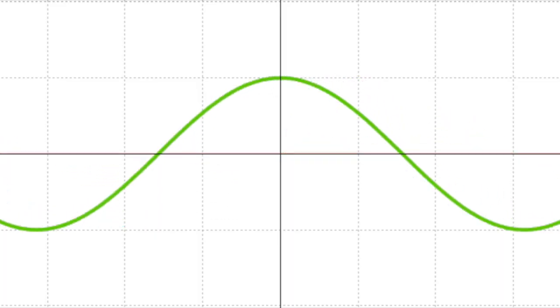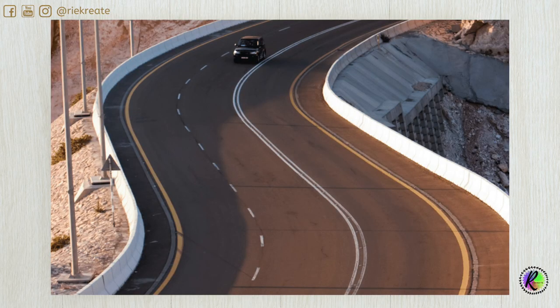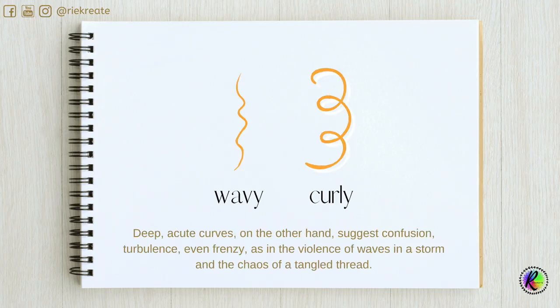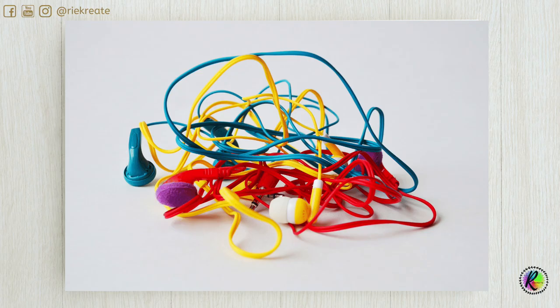Curved lines are lines that bend. Curvy, wavy, and curly are all examples of curved lines. Soft, shallow curves suggest comfort and safety, whereas deep, acute curves suggest confusion and turbulence, as in the violence of waves in a storm or tangled thread.